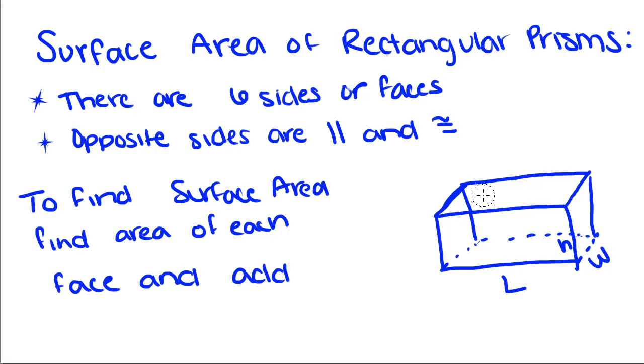So today we're jumping ahead a little bit to surface area of rectangular prisms. Now a rectangular prism is a 3D object that has six sides or faces, and I'm going to shade in the faces as we talk about them.